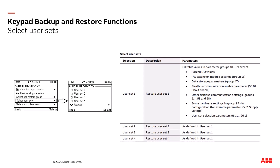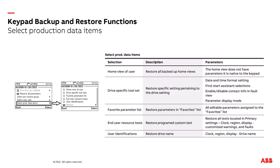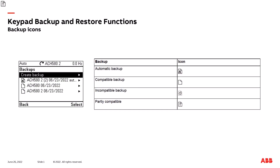Select user sets: there are up to four selected user sets in a drive — you can restore any individual one or all four. Selected production data items include the home view of the user, drive specific tool sets, favorite parameter lists, end user resource text, and user identifications — all individual items that you can select individually or select multiple ones for restoring. Let's look at the backup icons: the little note with an A is for automatic backup. The other icons represent compatible backups, incompatible backups, and partially compatible backup notes. If there's no letter in the middle, it's just a compatible backup.